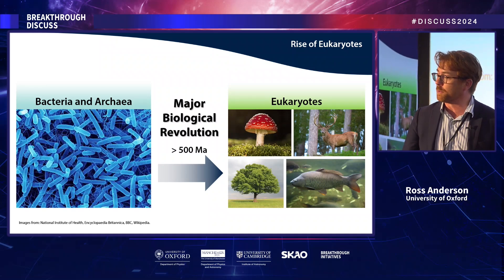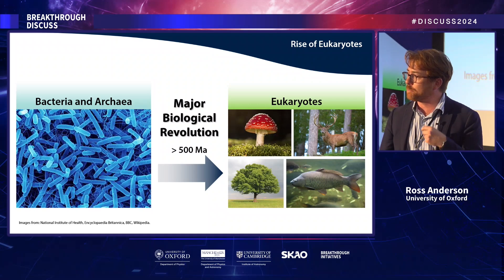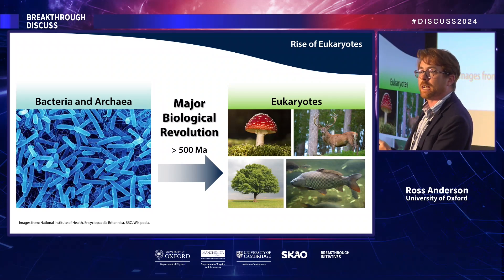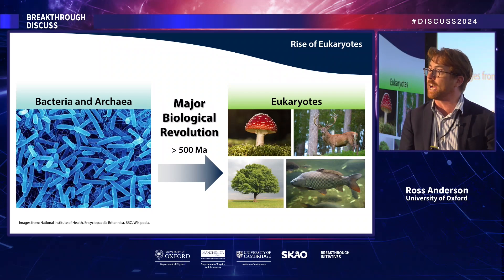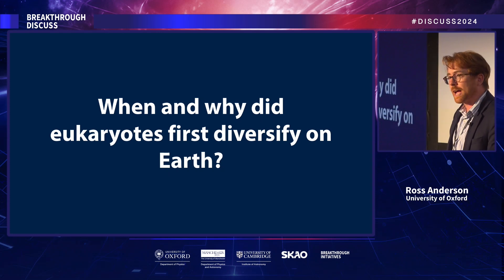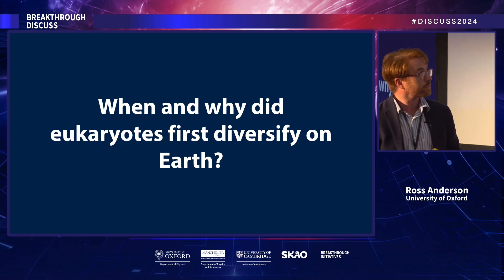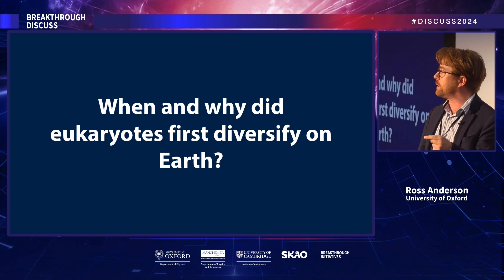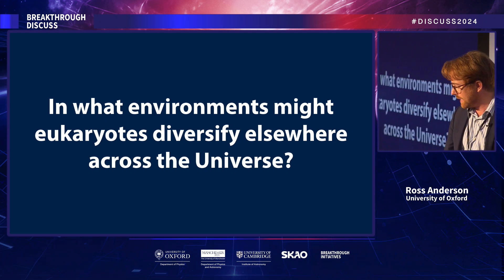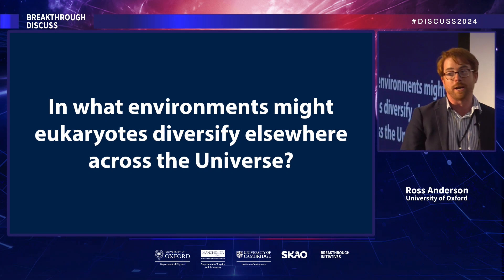But it hasn't always been this way. If we roll back the clock over 500 million years ago, our planet was undergoing a major revolution — going from a planet which only had bacteria and archaea to one which had this complex life. The question of when and why eukaryotes first diversified on Earth occupies my mind a lot, and it's also really important for the astrobiological community, because it informs what environments might allow eukaryotes to diversify elsewhere across the universe.